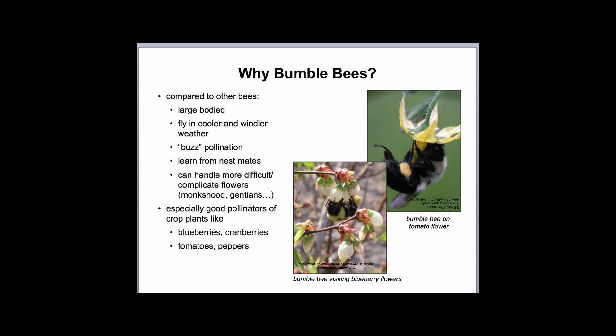They also have another trick that makes them great pollinators. They can do something called buzz pollination to unlock pollen from flowers whose pollen is stored in a little cone of male parts. Bumblebees are particularly smart for bees — they can learn from their nest mates where the good flowers are located. Young workers also learn very quickly how to handle difficult or complicated flower shapes like monkshood or gentian, where the pollen is hidden. All of these things make them especially good pollinators of crop plants like blueberries, cranberries, and also things in the tomato and pepper family.